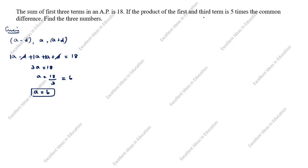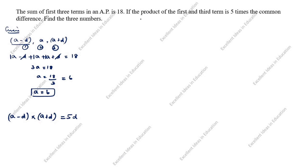Next, the product of the first and third term. Product means multiplication. The first term is A minus D, and the third term is A plus D. The product of the first and third term is equal to 5 times the common difference D. So they asked for the product of the first and third term: A minus D into A plus D.